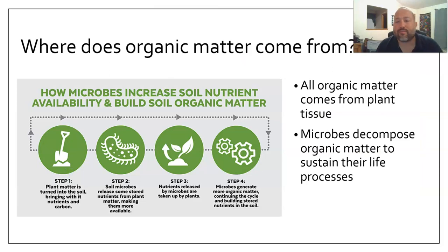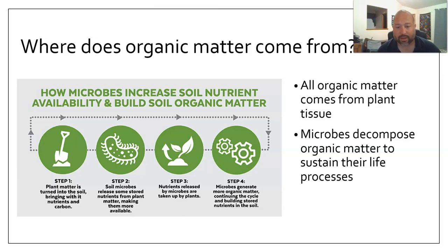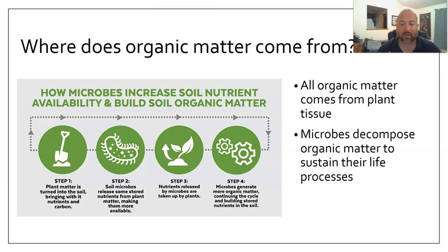Where does organic matter come from? All organic matter is really coming from plant tissue. The important step is that microbes are going to be the ones that decompose organic matter, and they do this to sustain their own life processes. If we look at it as a four-step process: plant matter is turned into soil, bringing with it nutrients and carbon; then microbes release stored nutrients from the plant matter, making them available; the nutrients are then taken up by the plants; and then the microbes generate more organic matter, continuing the cycle and building stored nutrients in the soil.